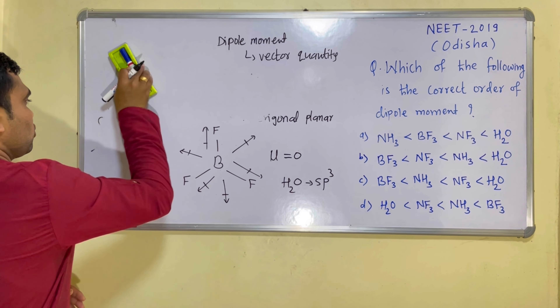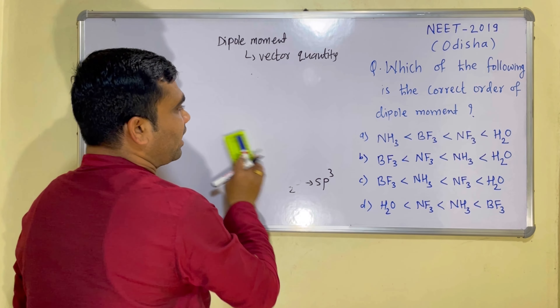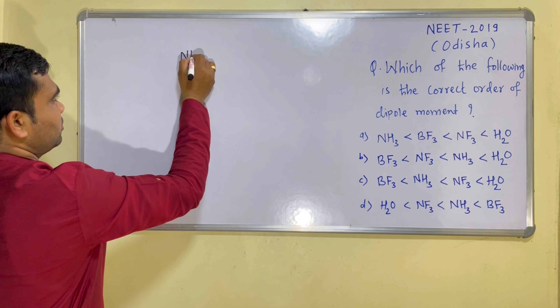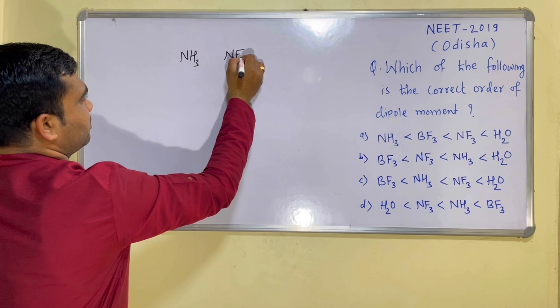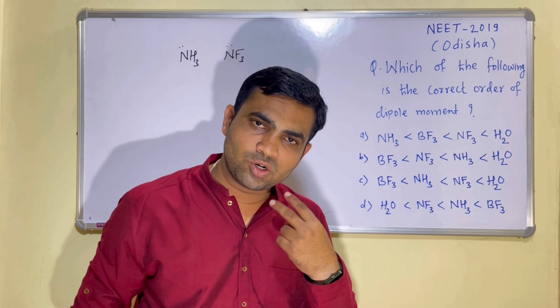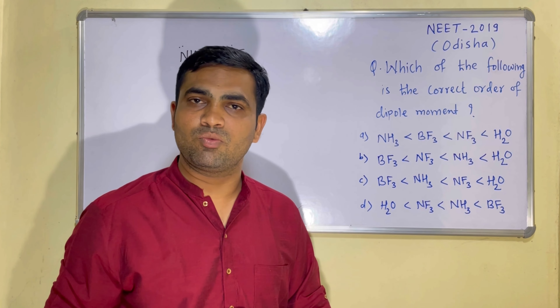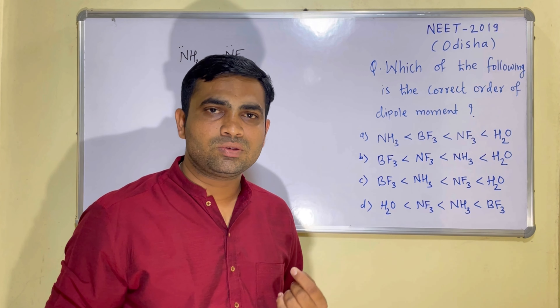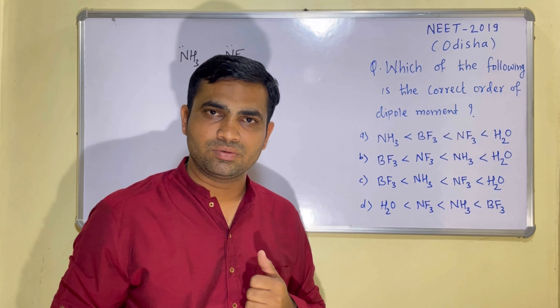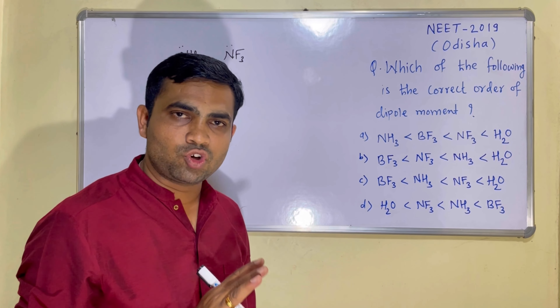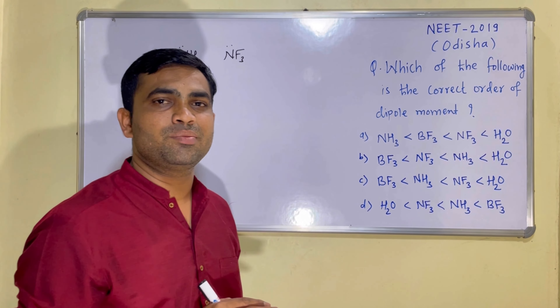Let's talk about the structures of NH3 (ammonia) and NF3 (nitrogen trifluoride). In both NH3 and NF3, nitrogen has one lone pair. In water there were two lone pairs, giving the highest dipole moment. Here with one lone pair, the dipole moment will be less compared to water — that's why water ranks highest. Now we compare NH3 and NF3, both having one lone pair, and geometry as well as hybridization is similar in both.